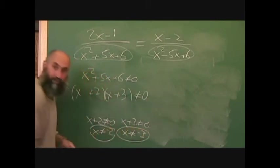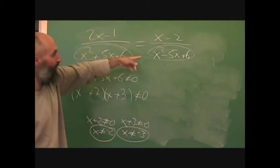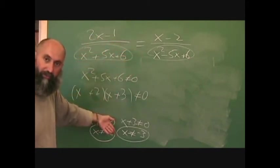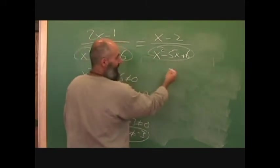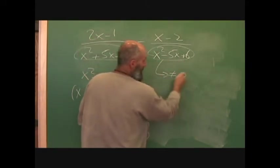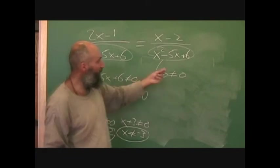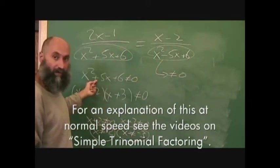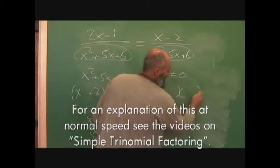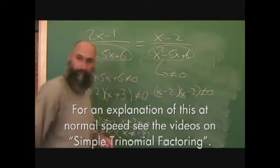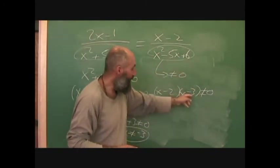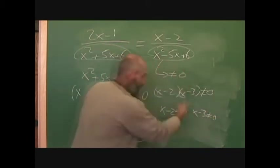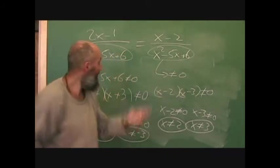Those are the restrictions for the left denominator. For the right side, x squared minus 5x plus 6, you do the same thing — two numbers that multiply to positive 6 and add to negative 5, giving x minus 2 times x minus 3. So the restrictions are x can't equal 2 and x can't equal 3. This equation has four restrictions total: x ≠ -2, -3, 2, and 3.